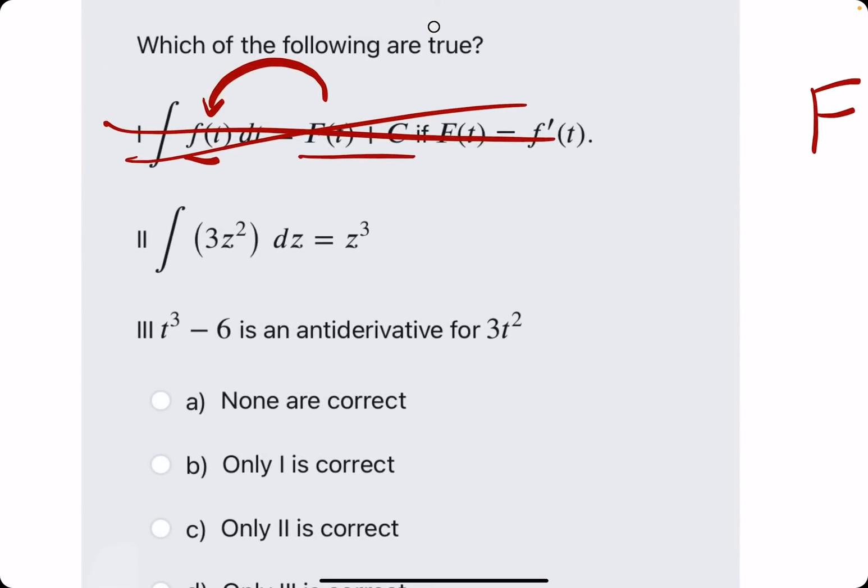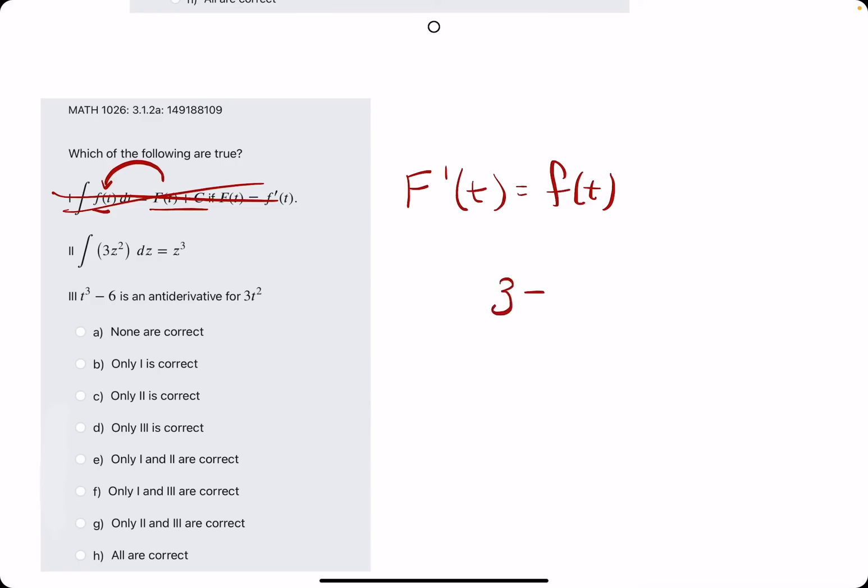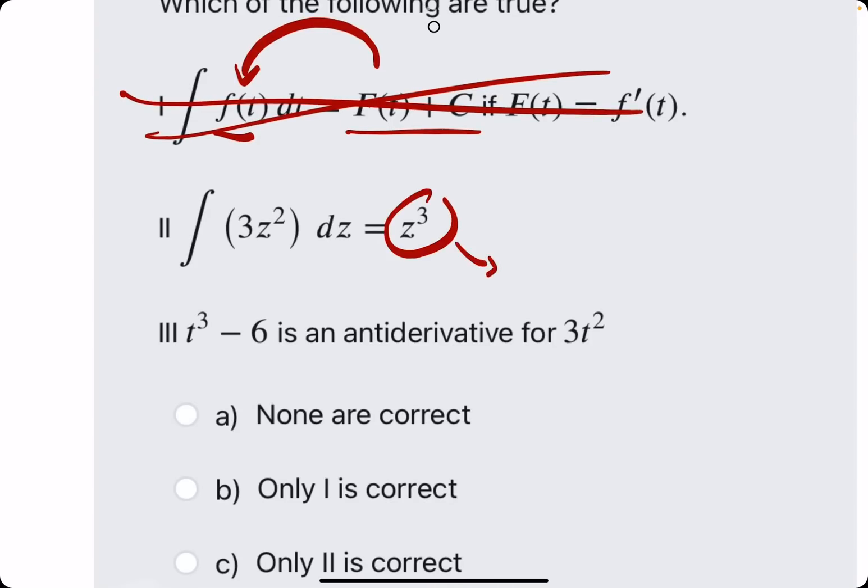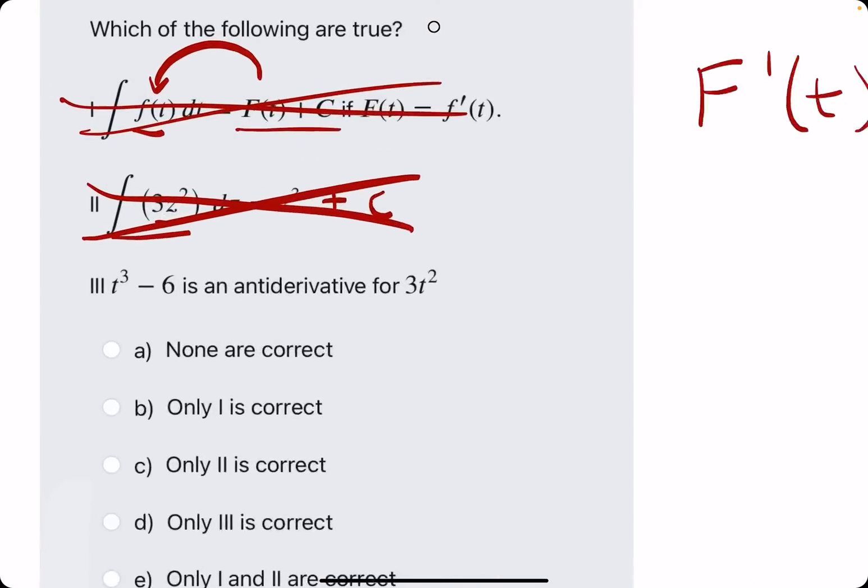All right, number two. 3z² under the integral equals z³. So, you might say, well, yeah, if we take z³ and we take its derivative, we bring out the 3, we leave the z, and we subtract 1 from the exponent to get 3z², that does match this. There's an issue, though. Whenever we take an integral of some function, no see, no true.